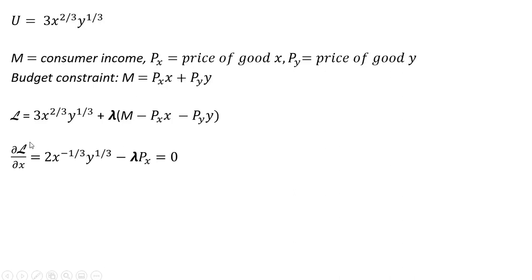We're going to take the partial derivative of the Lagrangian with respect to good x. We bring the two-thirds exponent down in front: two-thirds times three leaves us with two. On the x-term, we subtract one from the exponent: two-thirds minus one gives x raised to the minus one-third power. Finally, the lambda term leaves us with minus lambda times the price of good x. We set that partial derivative equal to zero.